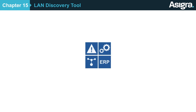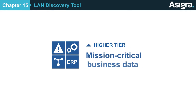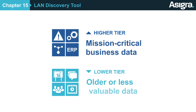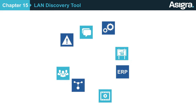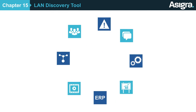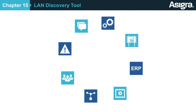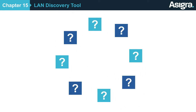Most companies have different types of data on their networks. These range from more frequently accessed or higher tier data to older or less valuable data that can be protected with a lower recovery time objective. It can be hard to discover what types of data exist and protect them appropriately.